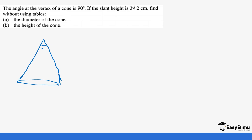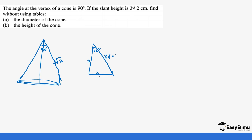So this angle here at the base is 90 degrees, and the slant height is 3 root 2. We want to find the diameter and the height of the cone without using tables. So if we drop a perpendicular bisector from the vertex, we get a right-angled triangle inside, and this divides the vertex angle into 2, so we have 45 degrees on each side and a slant height of 3 root 2. We need to find x — the radius — first, then use that to get the diameter.